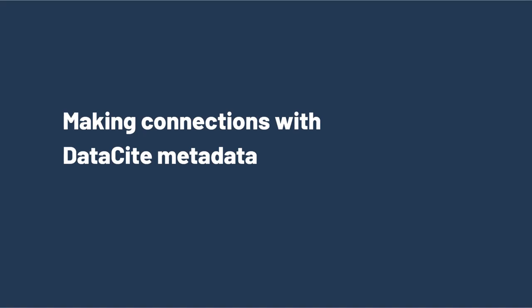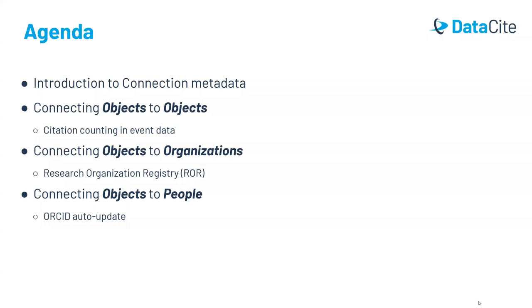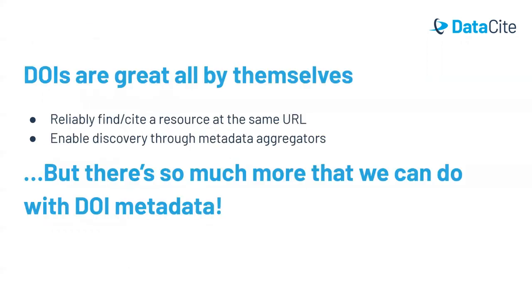There are a few more things that repository managers can do with dataset metadata to improve discoverability. In this section, we'll cover a brief introduction to connection metadata, and elaborate on the three main types of connection that can be established through metadata and the services they enable. The DOI string and the descriptive metadata they come with can help users reliably find and cite a resource, which enables discovery through metadata aggregators like data portals and indexes.